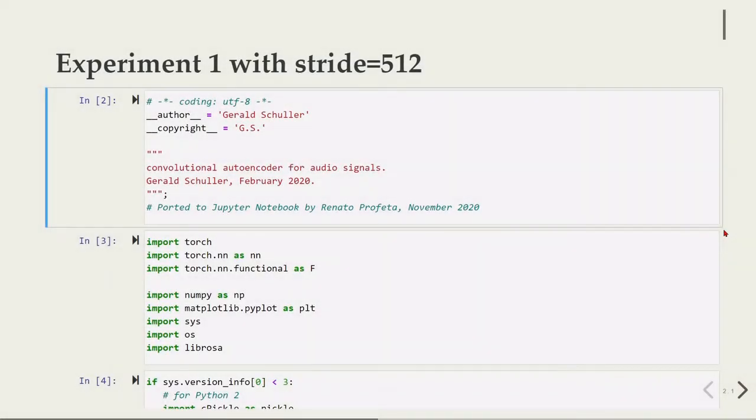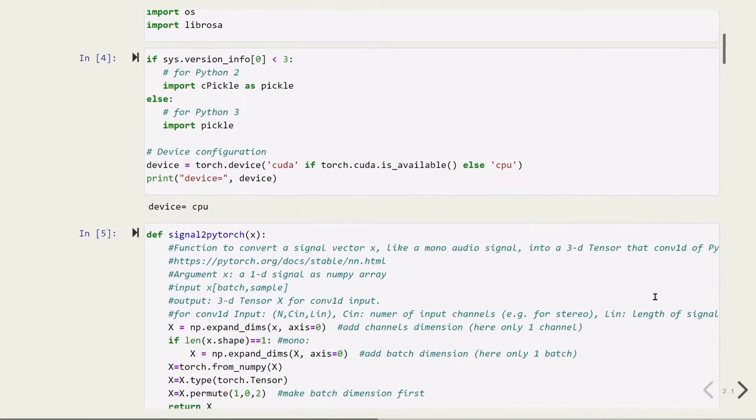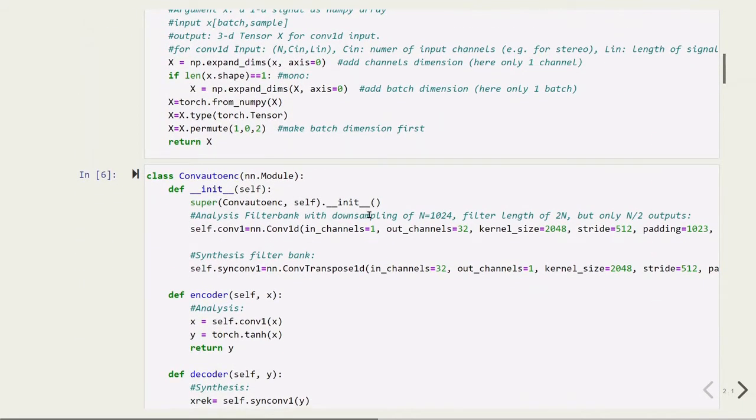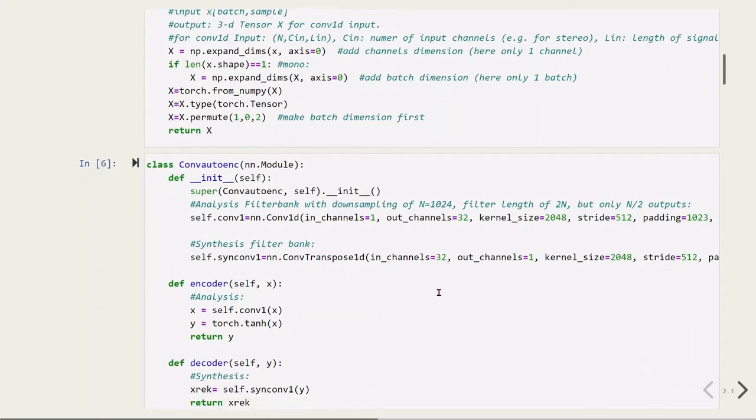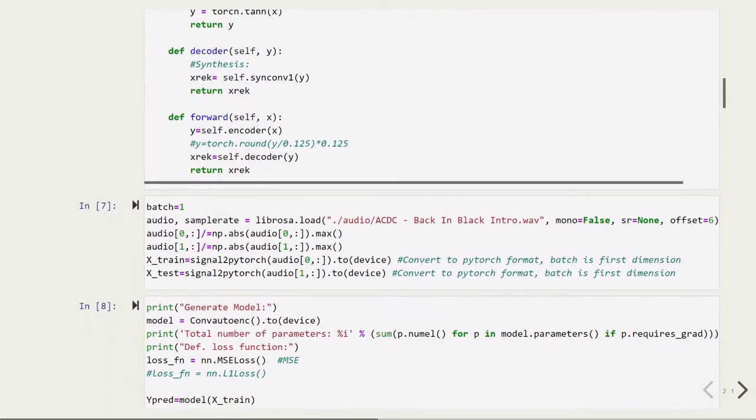For this first experiment we are using exactly the same code as we used before in the previous tutorial but with some modifications. These are the parameters we are going to use: number of input channels equals 1, output channels 32, kernel size of 2048, and stride of 512. This is for the analysis part and this is for the synthesis part of our autoencoder.